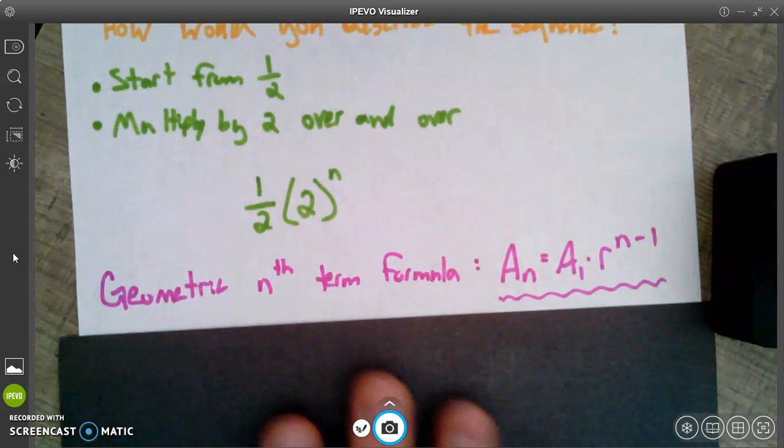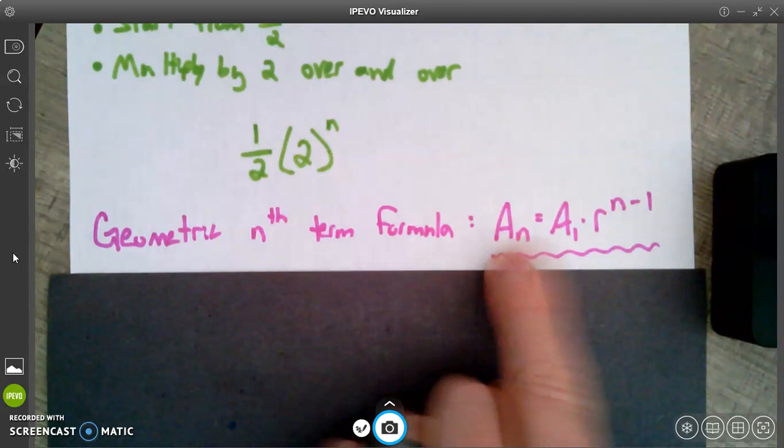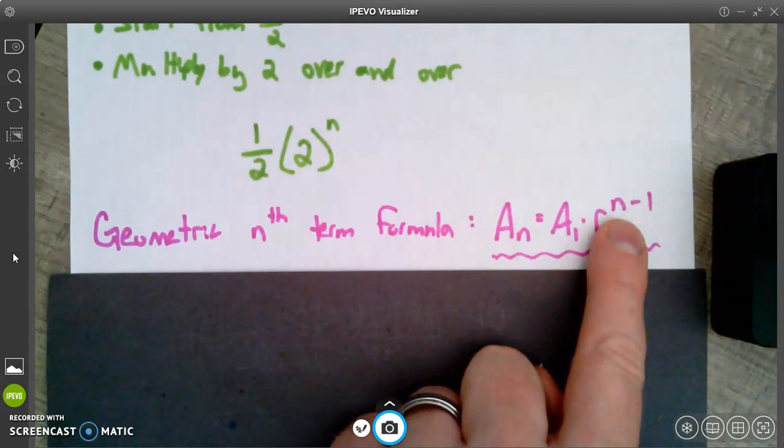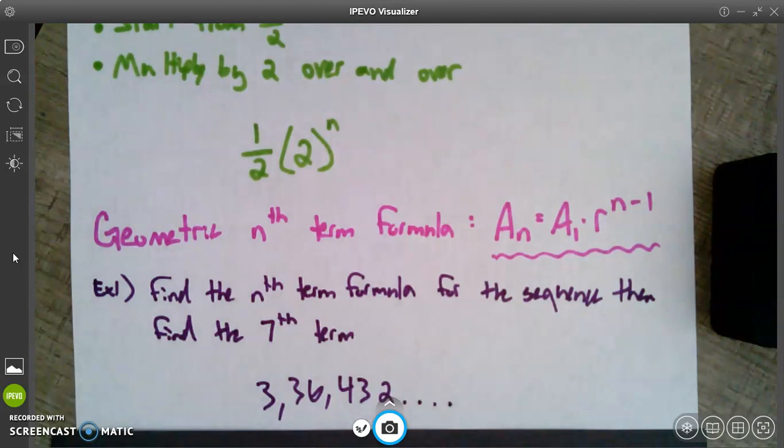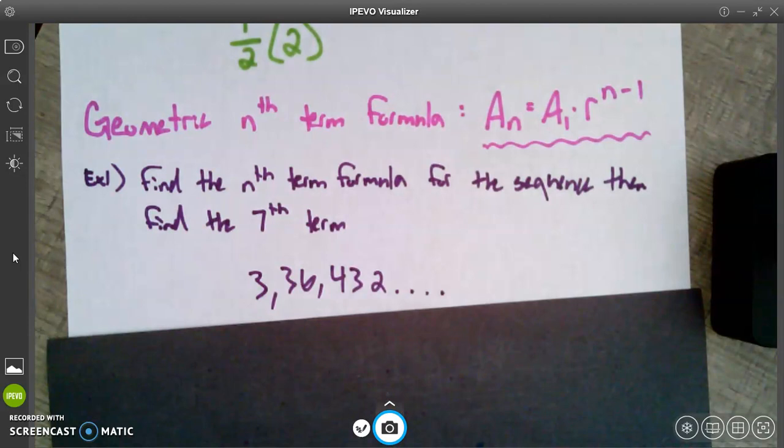So here it is. In all of its grandeur and glory, a geometric nth term formula for a geometric sequence looks like this. Nth term equals, you need to know the first term. You need to know what the common ratio is. You need to know what term we're looking for. Where are we at in this sequence. Not too bad. Let's try a practice round with it. Here's a sequence: 3, 36, 432. I want two things from this. So I want you to hit pause in a second and find the nth term formula, like a formula to give me any term I want. And then I want you to find the seventh term. So use your formula and find the seventh term. Go ahead. Hit pause.